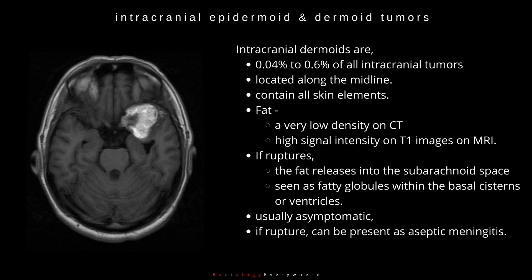If a dermoid ruptures, the fat releases into the subarachnoid space, seen as fatty globules within the basal cisterns or ventricles. Dermoids are usually asymptomatic, but if ruptured, can present as aseptic meningitis.